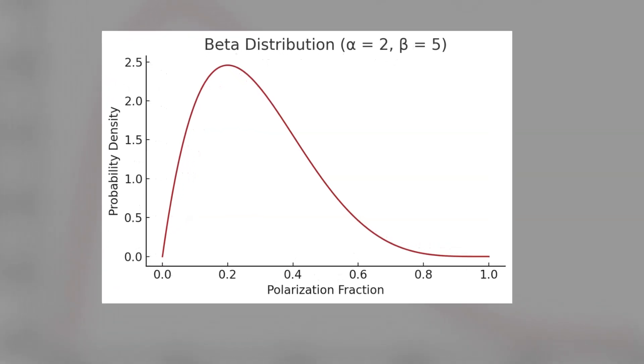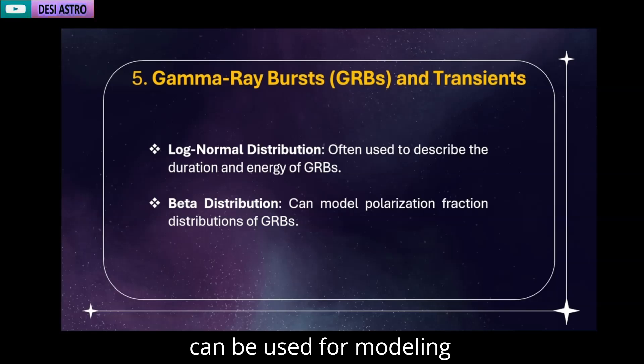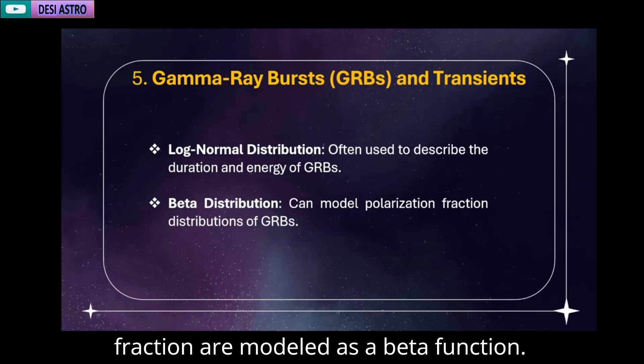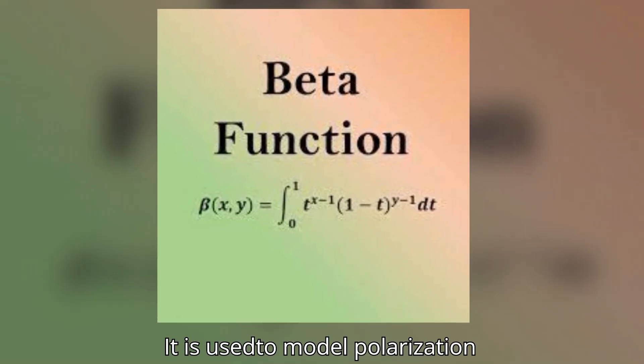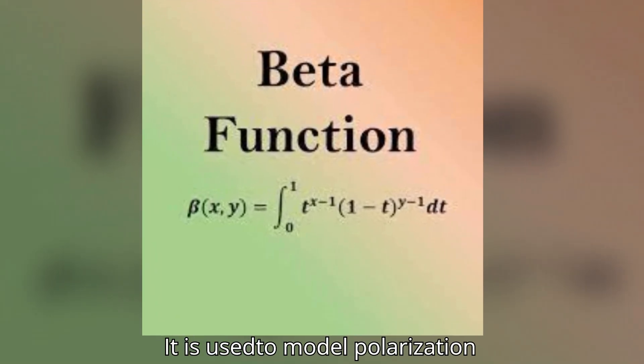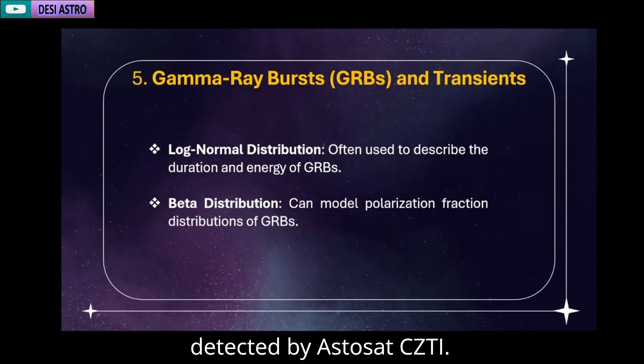Beta distribution can be used for modeling polarization fraction of GRBs. GRB polarization fractions are modeled as a beta function. It is used to model polarization by AstroSat CZTI.